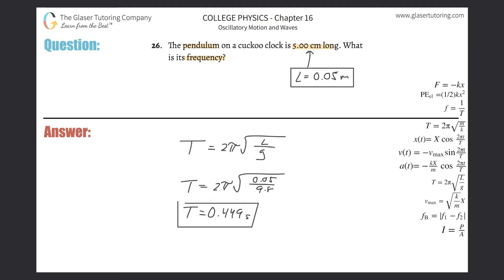It's asking us for the frequency, not the period. Now you're thinking, how can I connect the period to the frequency? We have a simple formula: frequency equals one over the period. It's just the inverse. So this is just 1 divided by 0.449.